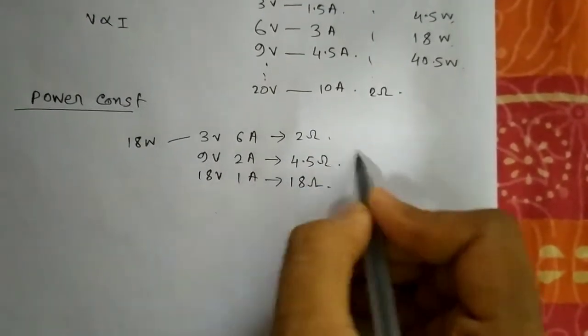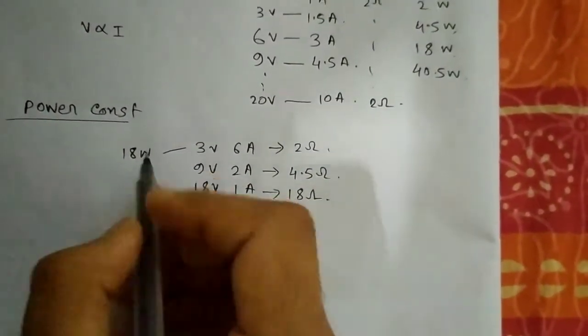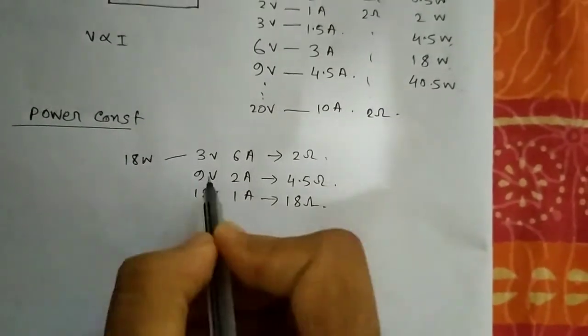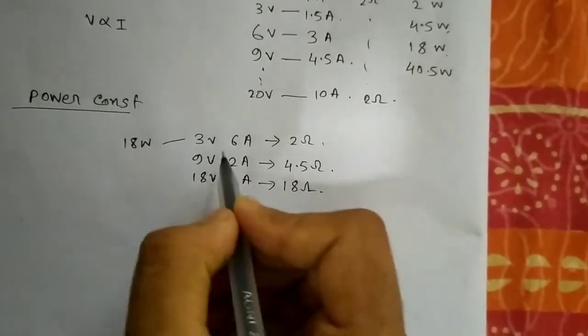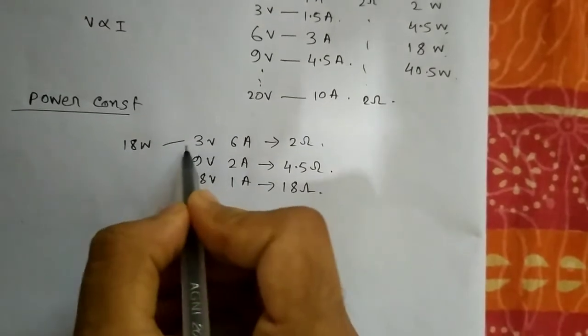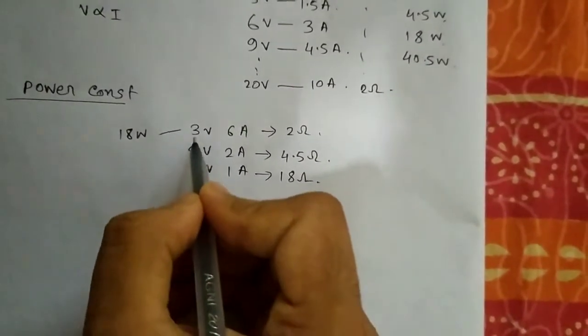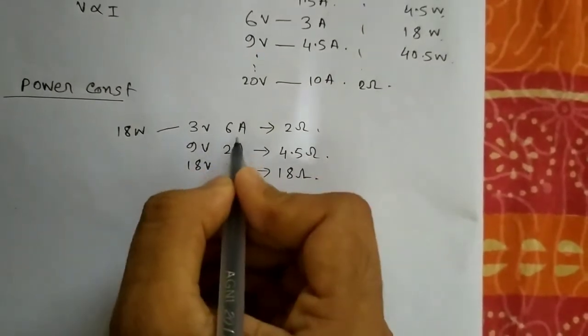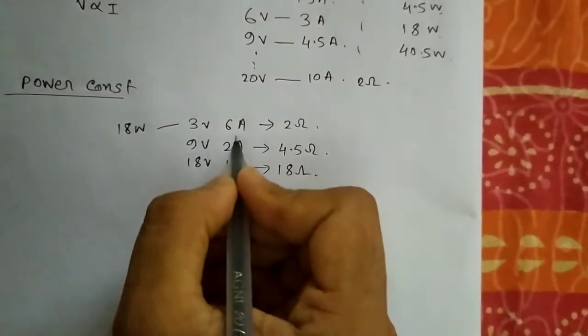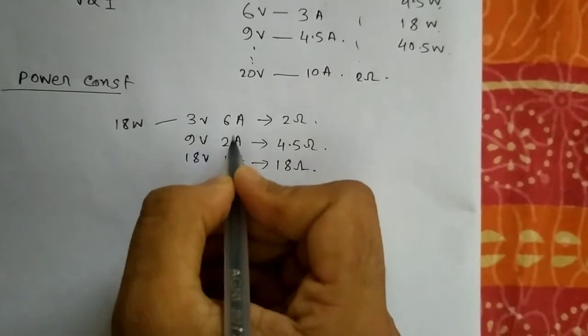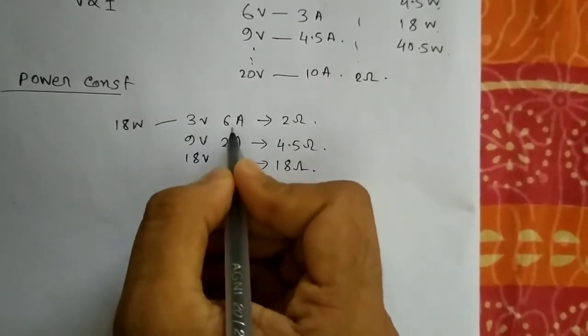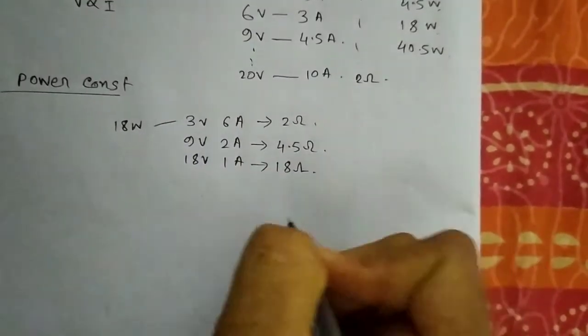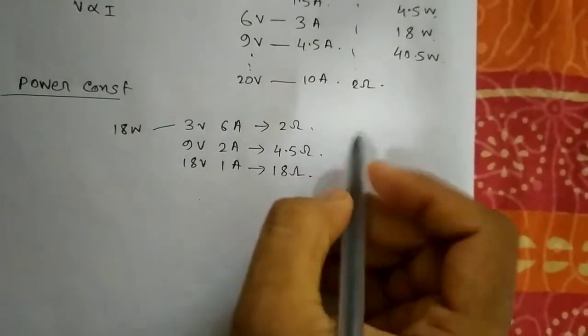Here we want to maintain a particular power but we want to vary the voltage. Say the voltage is thrice, that means 3 into 3 equals 9 volts. But you can see the current here is not 6 into 3 equals 18 amperes, rather it's 6 divided by 3 equals 2 amperes.